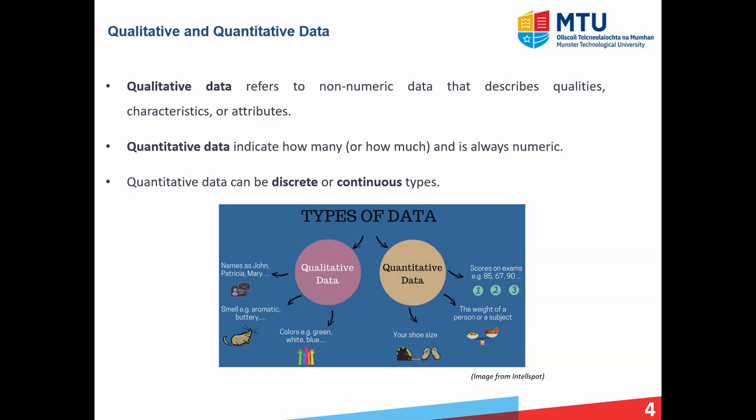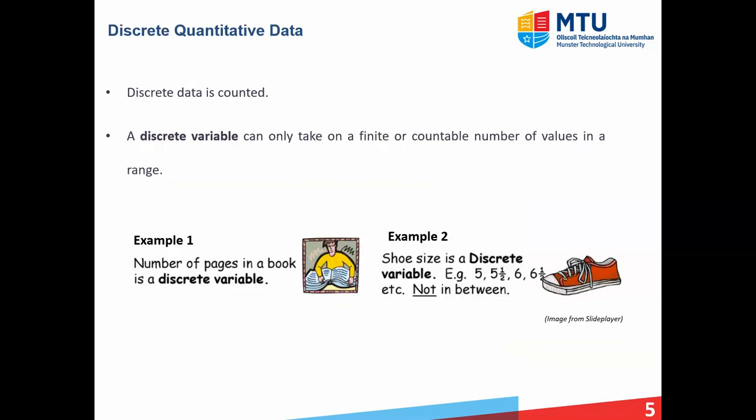Now quantitative data can be subdivided further into discrete or continuous. Let us consider discrete quantitative data first. Discrete data is any data that can be counted. For example, in example one below, we've got the number of pages in a book. That is something that, while it's monotonous, you can do it. You can count up the number of pages. Shoe size is something that can be counted as well. Another property of discrete data, or discrete variables, is that they can only take on a finite or countable number of values in a range.